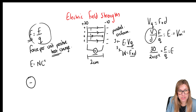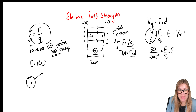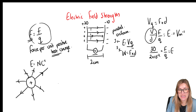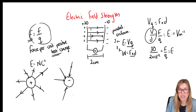If we have a positive test charge near an isolated positive sphere, it will be repelled away from the sphere. So the electric field lines always point outwards — this is called a radial field. For a negative charge, a positive test charge is attracted towards it, so the field lines point inwards. This is very similar to gravitational field lines around a planet.